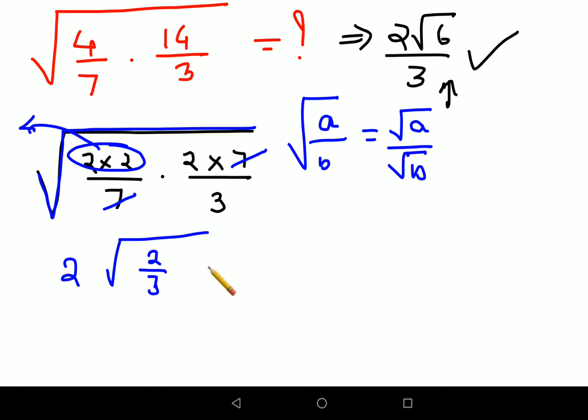So this can now be written as 2 root 2 upon root 3. Remember, in mathematics we do not allow roots in the denominator. Why? Because many of the roots become irrational, and dividing any number with an irrational number becomes very tricky.